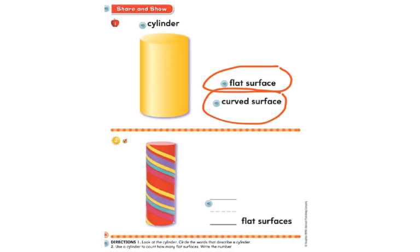Number two, down at the bottom, we see our little colorful cylinder. The question they're asking is: how many flat surfaces does a cylinder have? I want you to answer that. There is one flat surface on the top and one flat surface on the bottom. So how many flat surfaces are there total? Two flat surfaces on a cylinder.